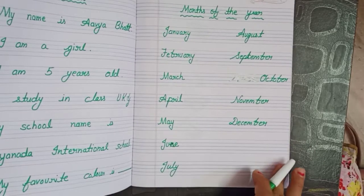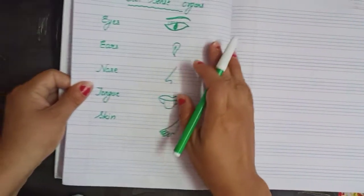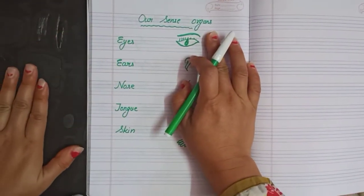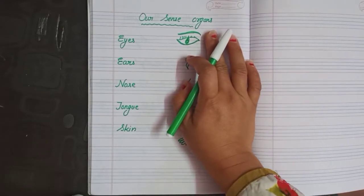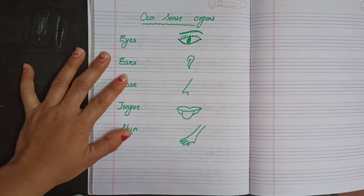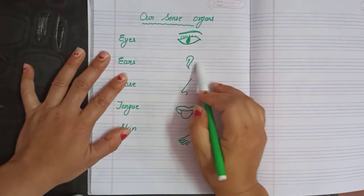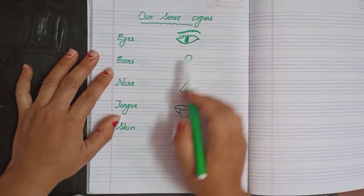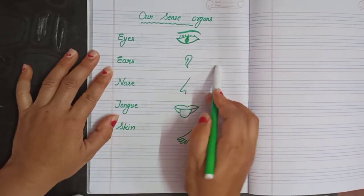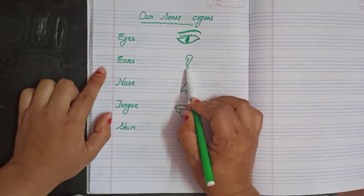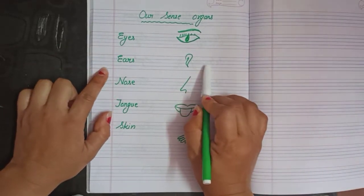Now next one is our sense organs. What are sense organs? These are the organs through which we feel things. When we see something, we use our eyes. Eyes help us to see. Ears help us to hear. Nose helps us to smell.